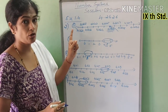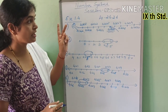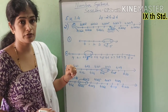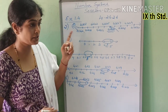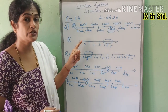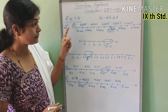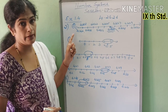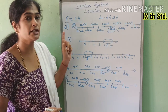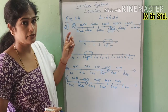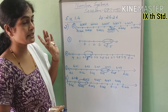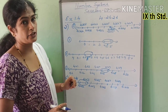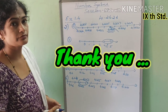With this we complete exercise 1.4. We have learned the representation of decimal expansions of numbers on the number line — one type was terminating decimal expansion and another was non-terminating but repeating decimal expansion. Thank you.